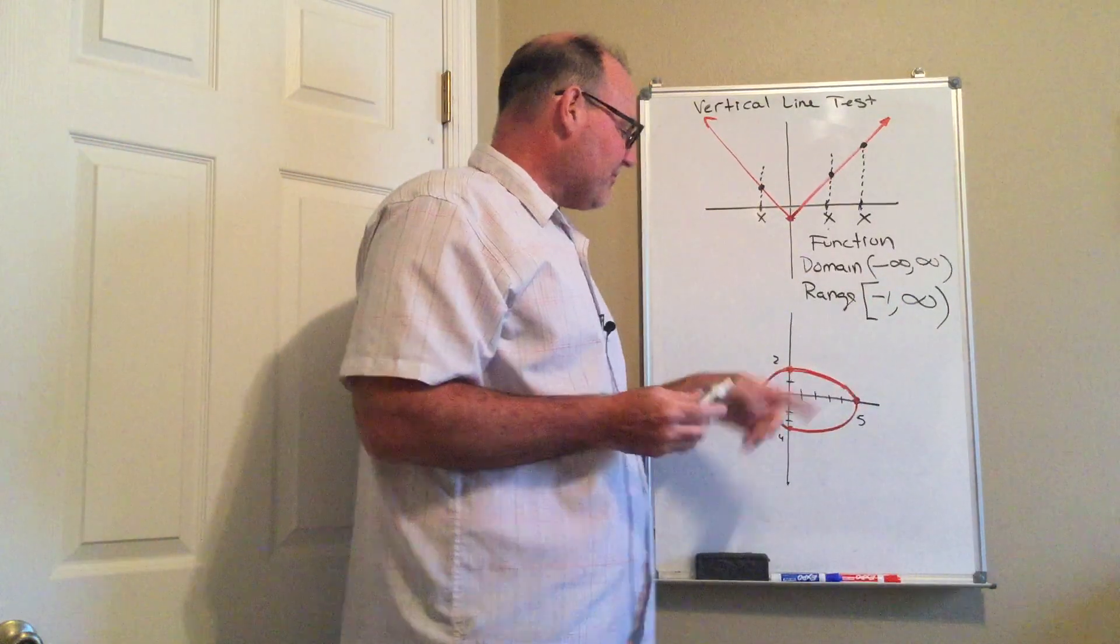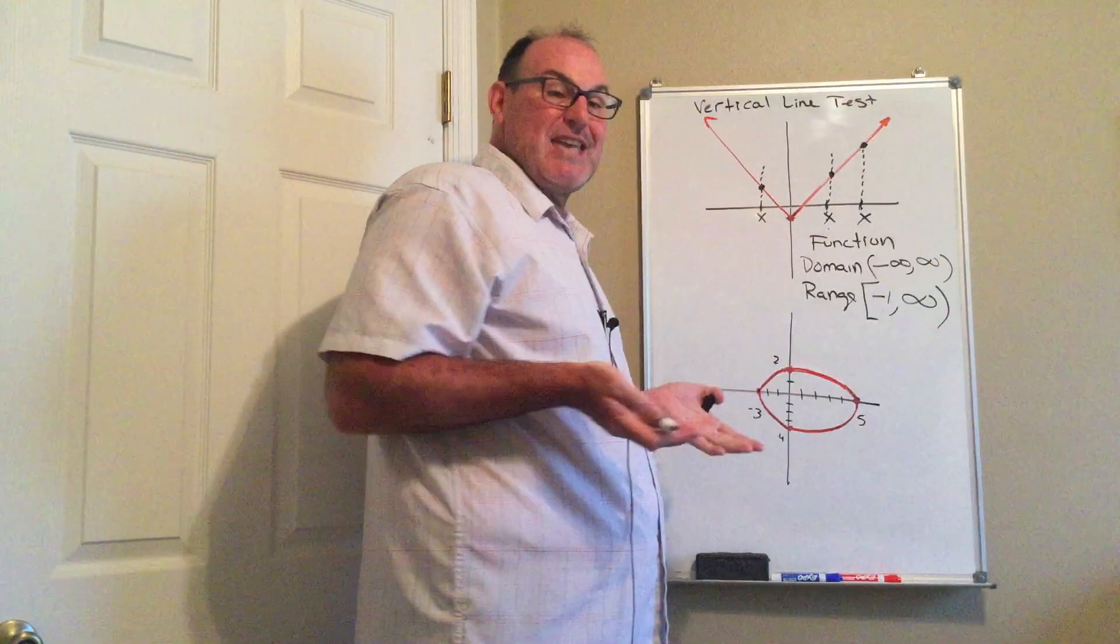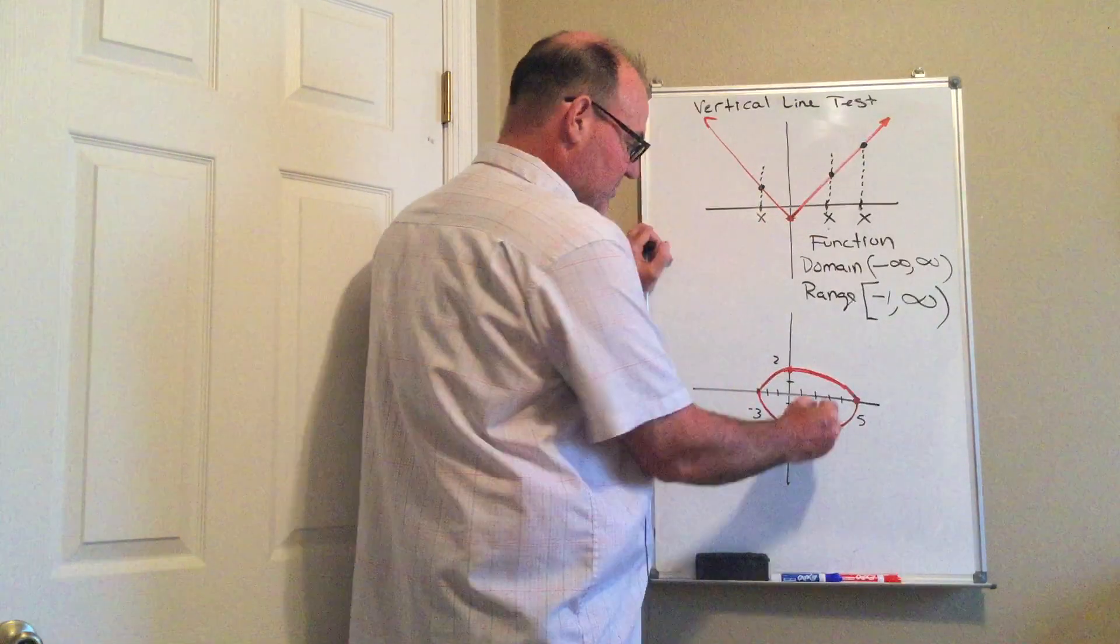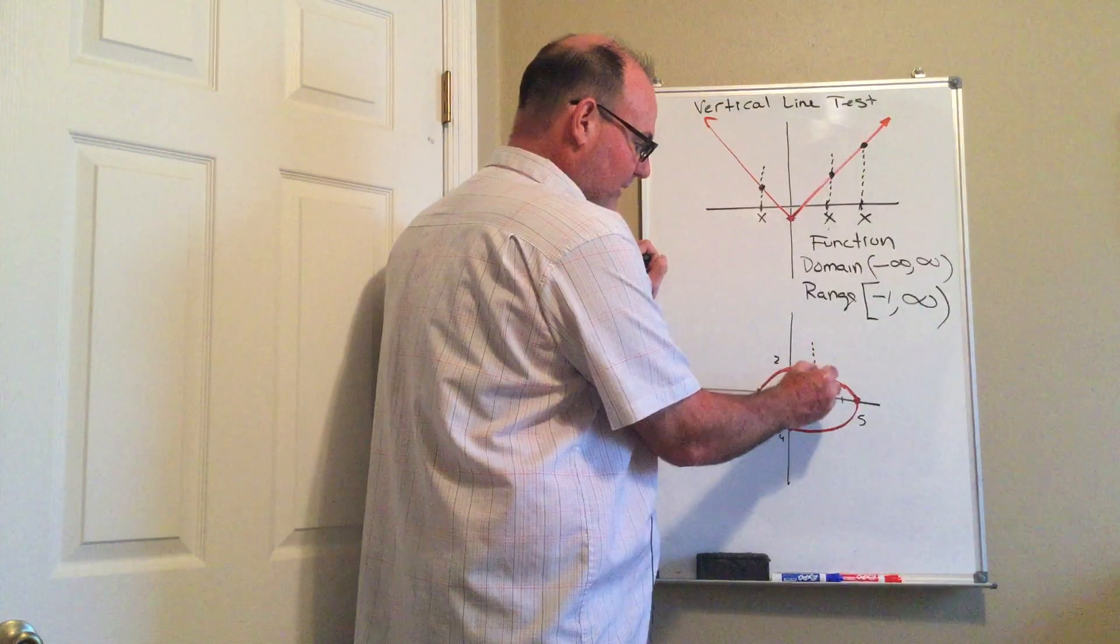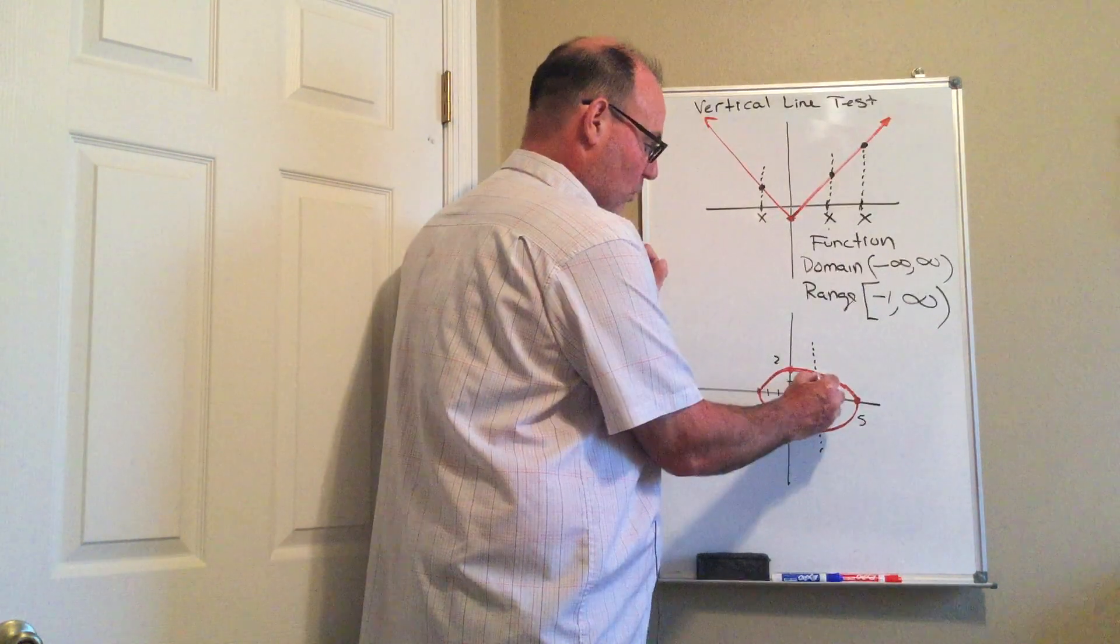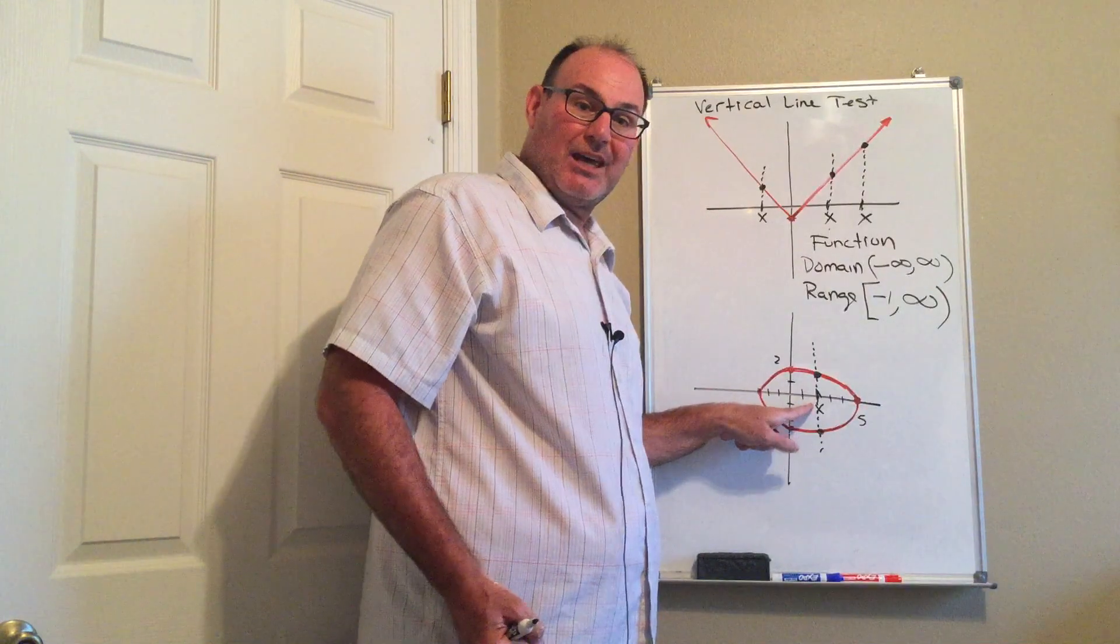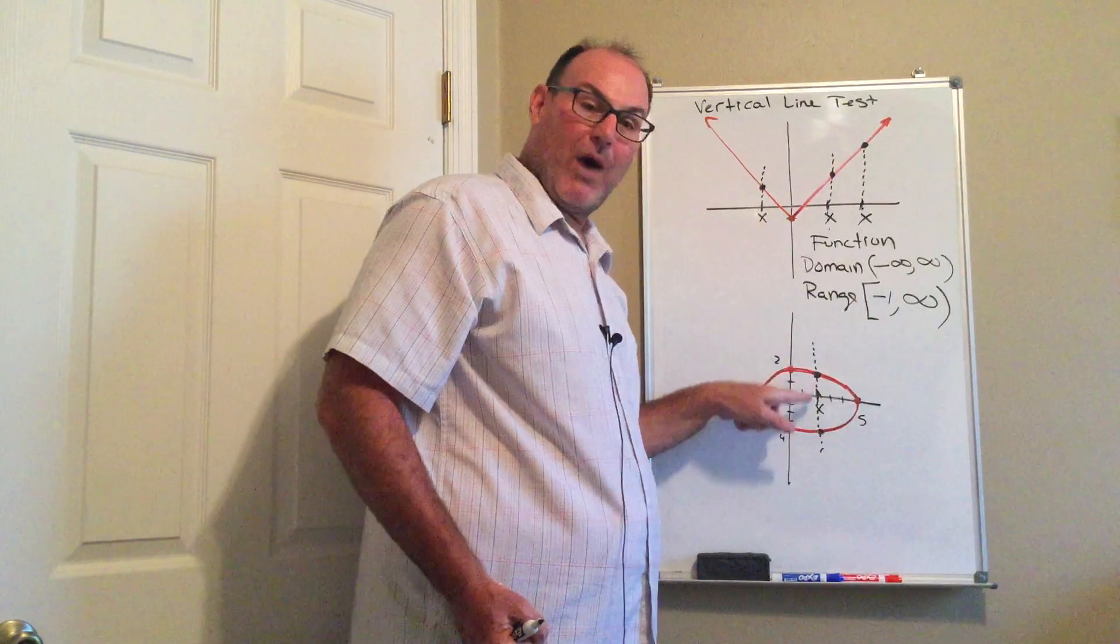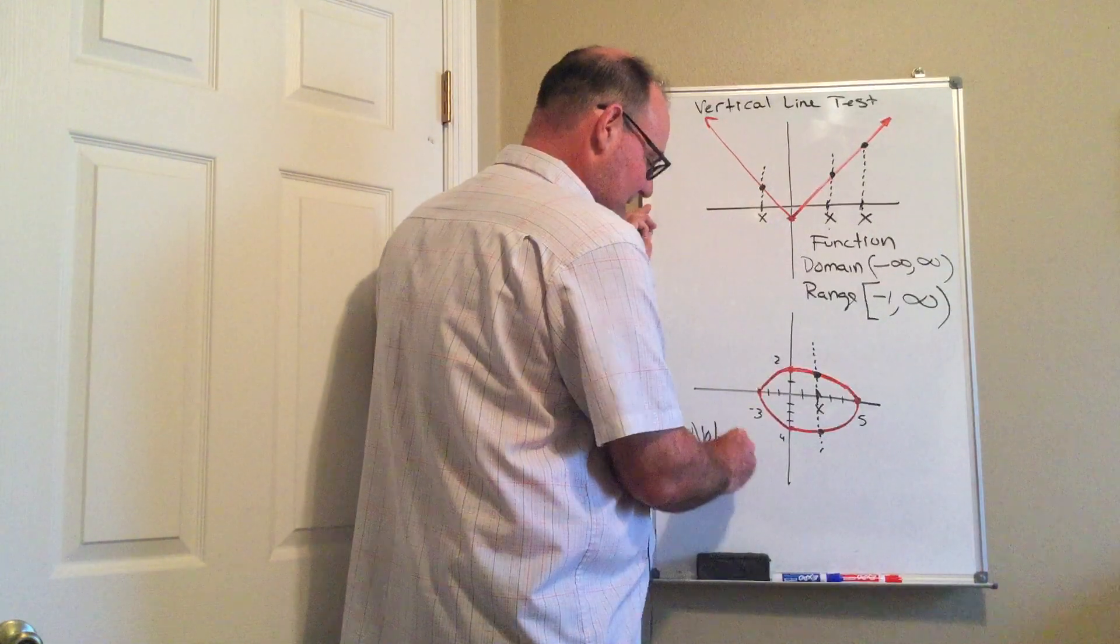My second graph looks like a circle that's been smushed, so again I want to do the vertical line test. So here's an x value, and notice what happens here when I draw my vertical line. How many times does that vertical line hit the graph? Once here, once here. So for that x value it corresponds to two y values, not one. So for that reason this is not a function.